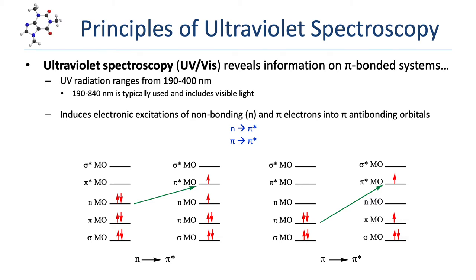In ultraviolet spectroscopy, the measurements are done in wavelength, specifically nanometers. Ultraviolet radiation is typically between about 190 and 400 nanometers. A typical spectrometer will measure absorptions from about 190 nanometers up to about 840 nanometers, and that goes well into the range of visible light. That's why ultraviolet spectroscopy is often referred to as UV-Vis spectroscopy.